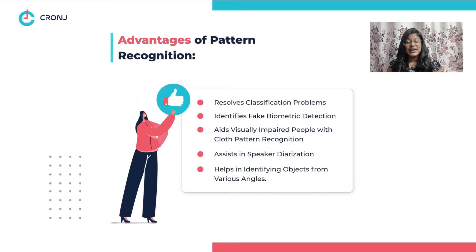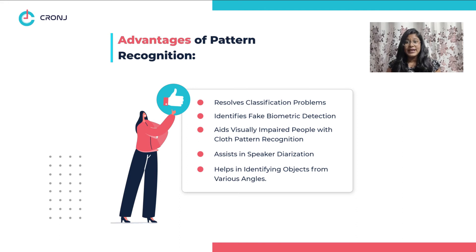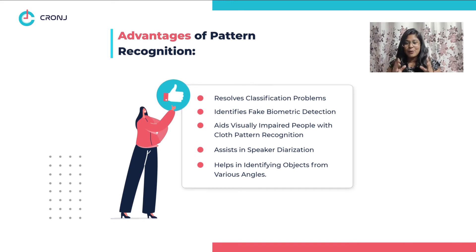Now, let's move on to the advantages of pattern recognition. Firstly, pattern recognition helps in resolving classification problems. Secondly, it resolves fake biometric detection. Thirdly, it can be used by visually impaired people for cloth pattern recognition. Fourthly, it aids in speaker duration. Fifthly, using pattern recognition, we can identify objects from various angles and more.